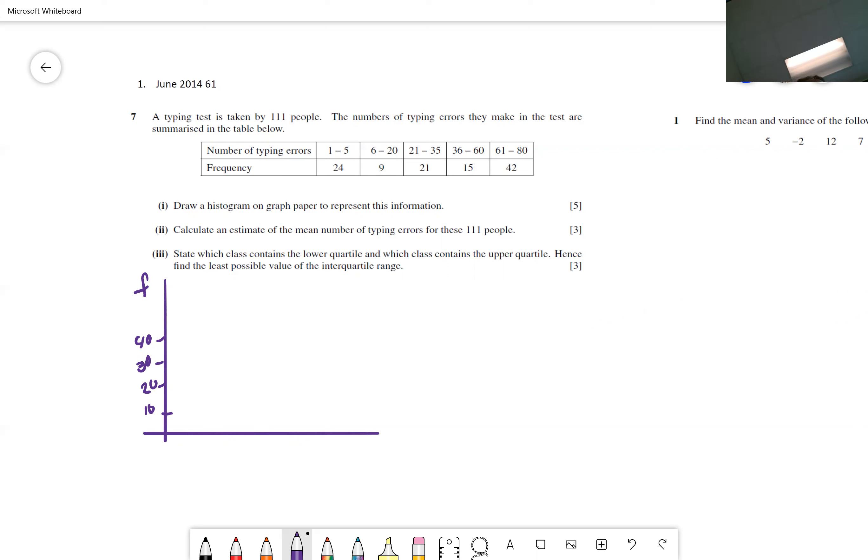Do the classes have the same width? No. So can we graph frequency? No, we have to graph something called frequency density. Your frequency density is your frequency divided by your class width.